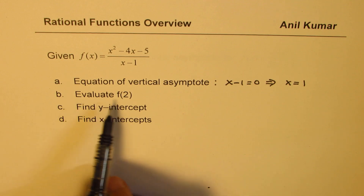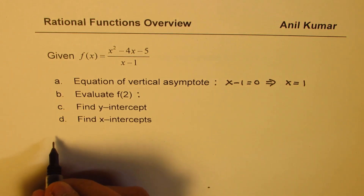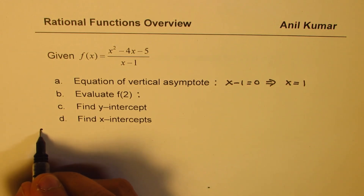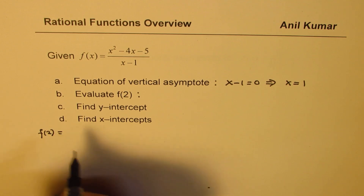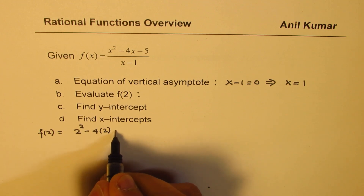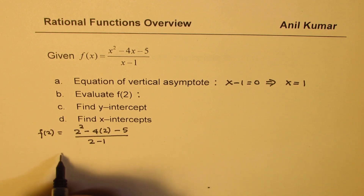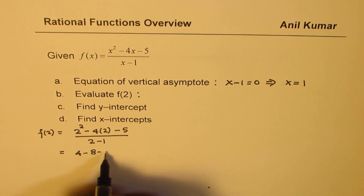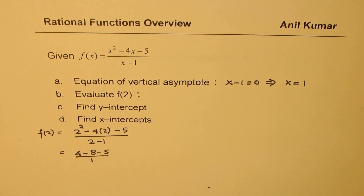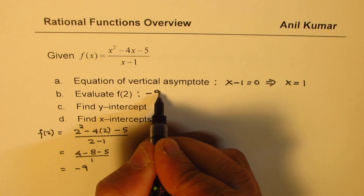The second part is to evaluate f(2), meaning substitute x equals 2 in the equation. So f(2) equals 2 squared minus 4 times 2 minus 5, divided by 2 minus 1. That gives 4 minus 8 minus 5 over 1. So 4 minus 8 is minus 4, and minus 5 gives minus 9. So f(2) equals minus 9.